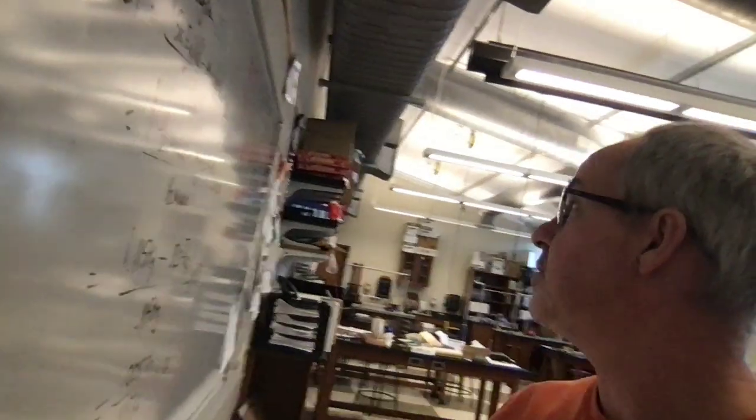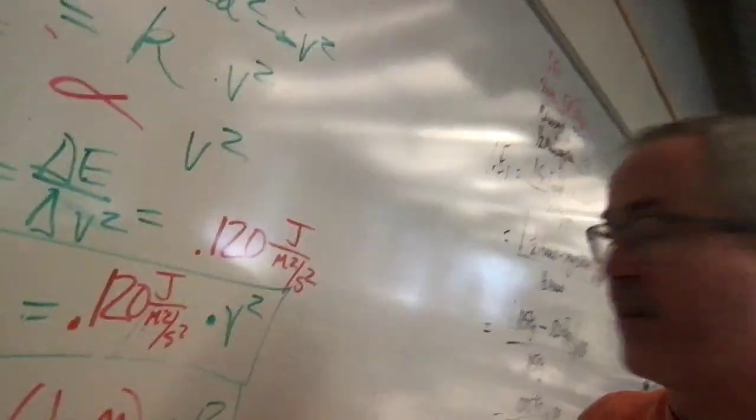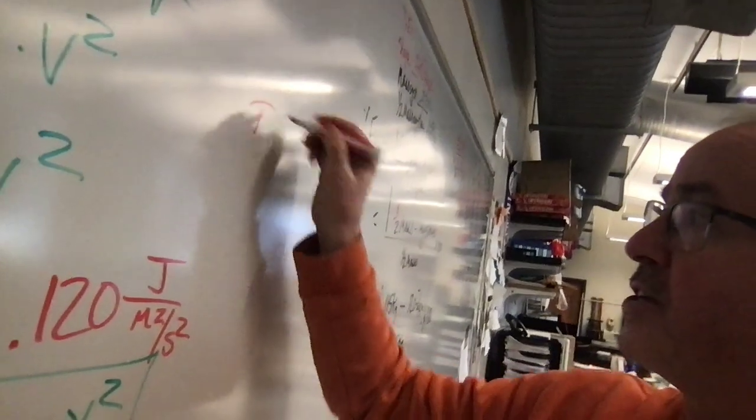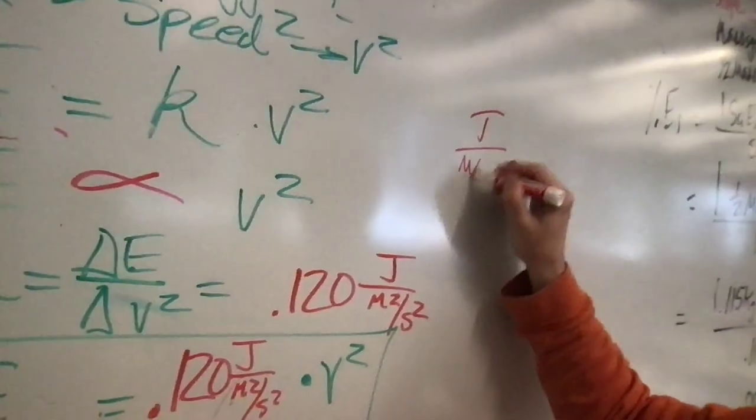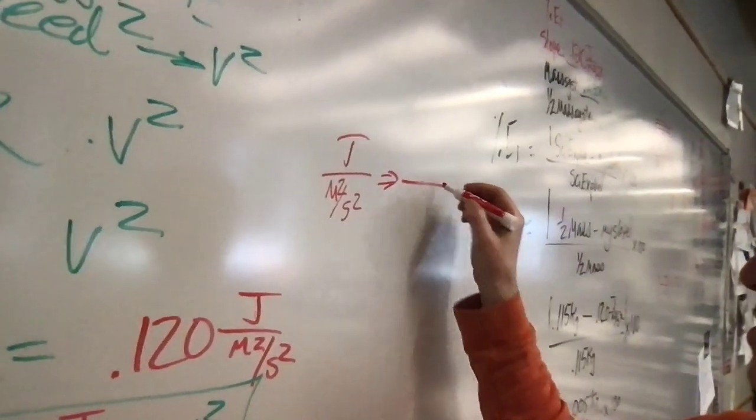Well then we had to try to figure out what the slope of that graph represented and I've realized I've erased this since I did this earlier today. We had units of joules per meter squared per second squared and from that we did some unit analysis.